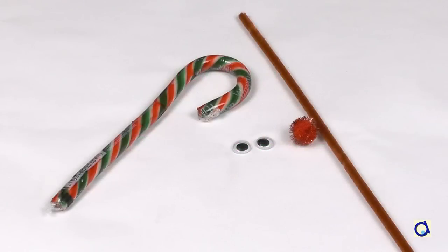For this project you will need a candy cane, one or more brown pipe cleaners, googly eyes, a red pom-pom, and a glue gun.